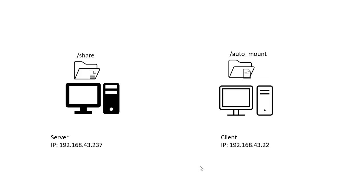Now let's see how to configure AutoFS in practice. I will connect two machines — one acting as the server with IP address 192.168.43.237, using an NFS share at /share. Whatever content I put into that directory I want to share with the client machine, whose IP address is 192.168.43.22. On the client machine, the shared content will be available at the mount point /auto_mount.